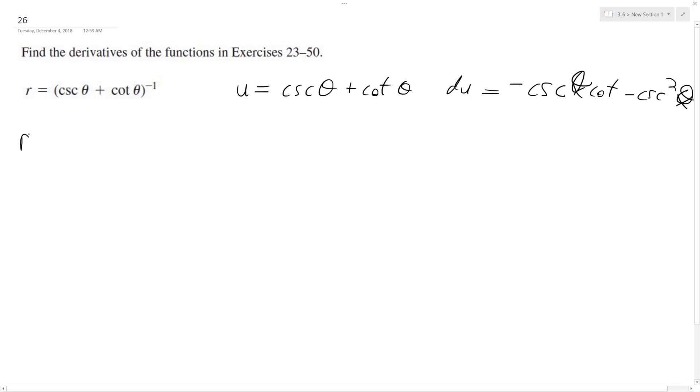Okay, so r of u is equal to u raised to the negative 1, because this is what we used to substitute. And r prime of u is going to be equal to, pull down the negative 1, negative u raised to the negative 2, du.